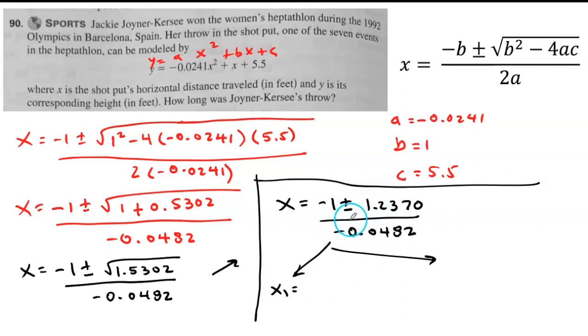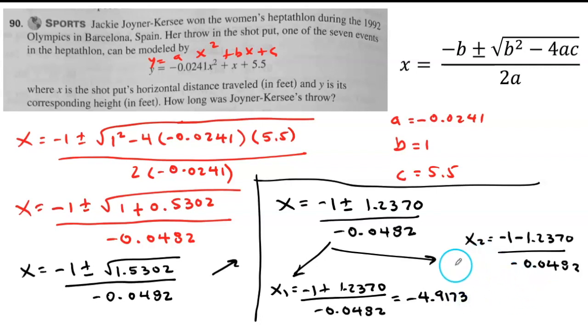From here, I know that I'm going to get two answers, one with a plus, one with a minus. The first one is going to be plus 1.2370 divided by negative 0.482. The second answer is going to be using the minus. This plus that is going to give me negative 4.9173. The second answer is going to give me 46.42.